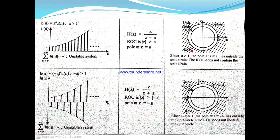Since the ROC does not contain the unit circle and the poles lie outside the unit circle, both stability conditions are not satisfied. For a stable system, the transfer function H(z) must contain the unit circle in its ROC, and all poles must lie inside the unit circle. If these two conditions are not satisfied, the system is unstable.